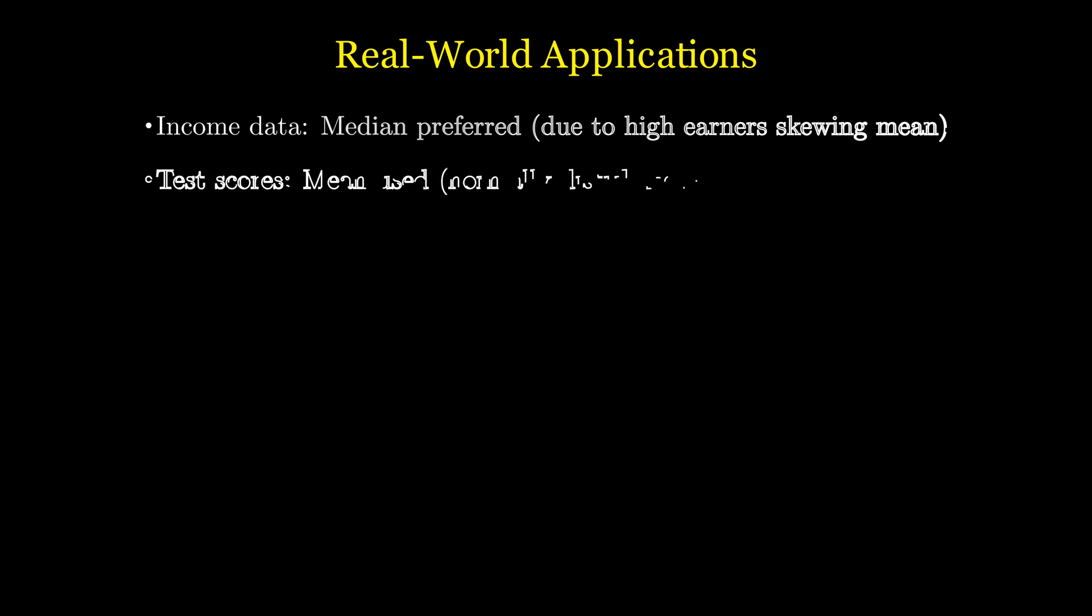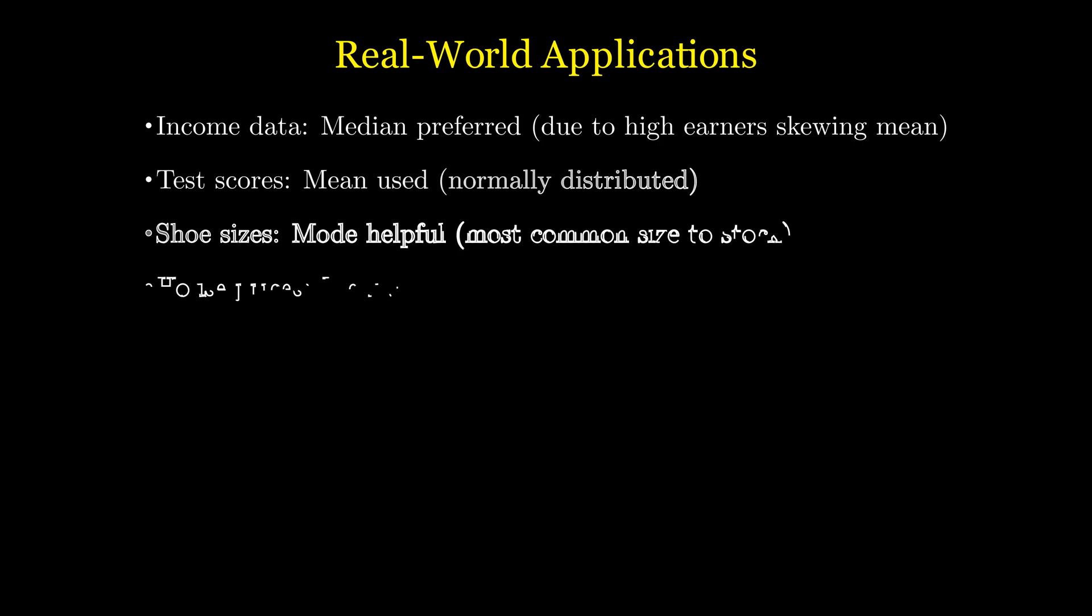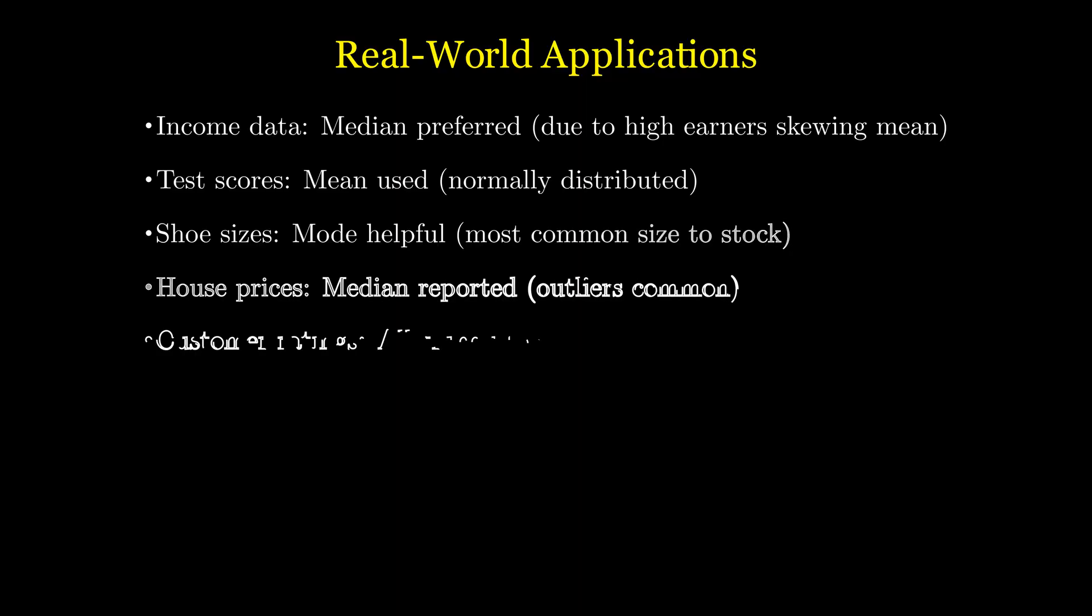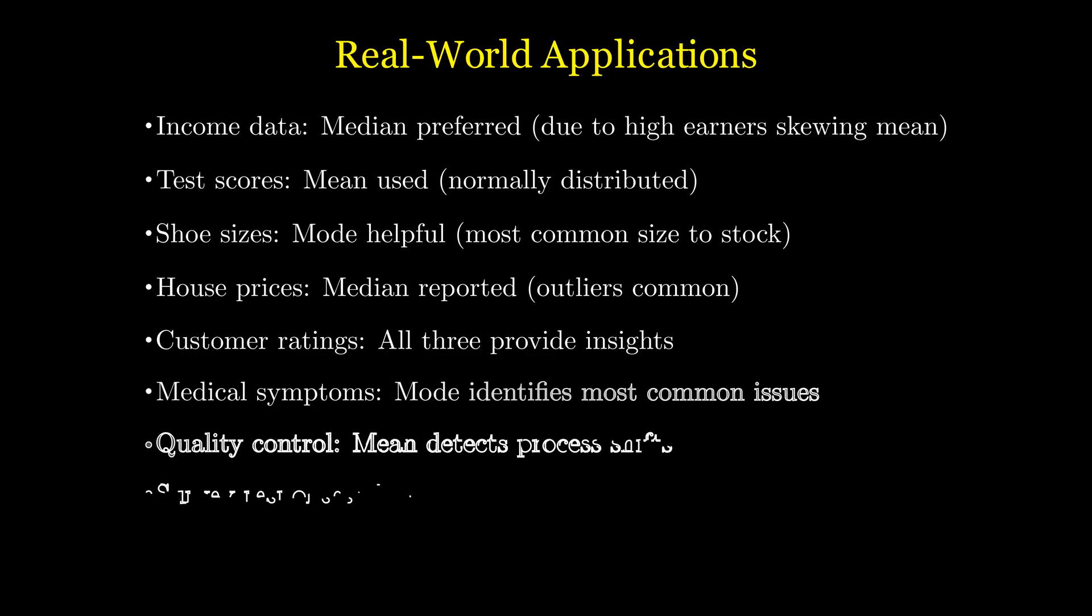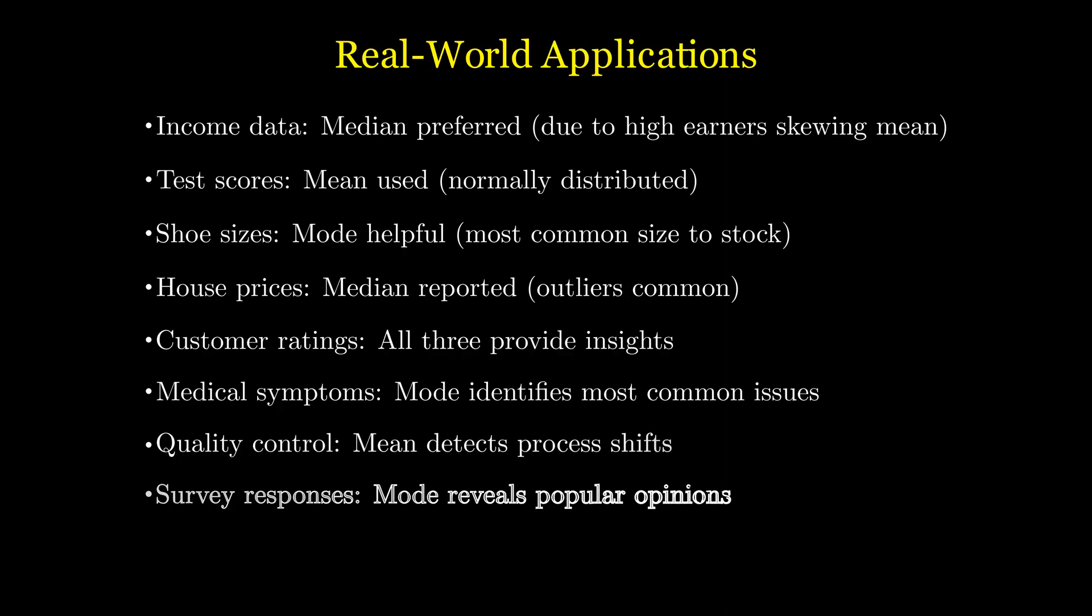In real applications, income data typically uses median because high earners skew the mean. Test scores often use mean since they are normally distributed. Retailers use mode for inventory decisions. Real estate reports median prices to avoid outlier effects. Customer satisfaction might use all three measures to provide comprehensive insights. Medical professionals use mode to identify the most common symptoms. In quality control, the mean helps detect subtle process shifts. Survey researchers use mode to reveal the most popular opinions among respondents.